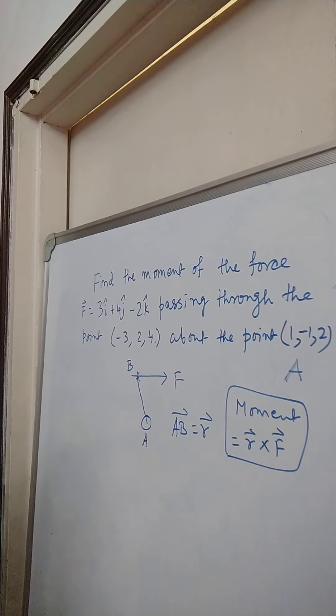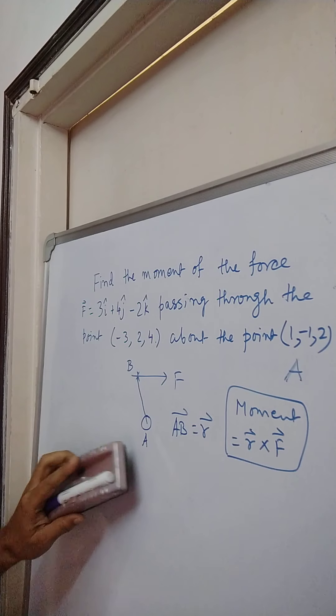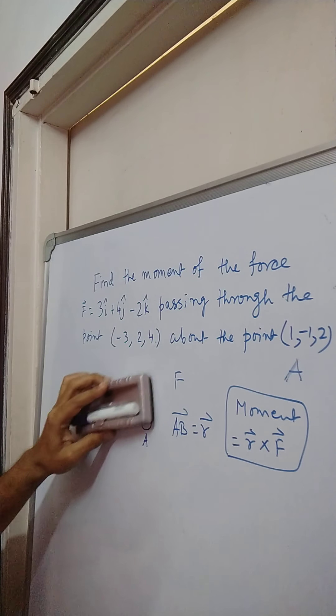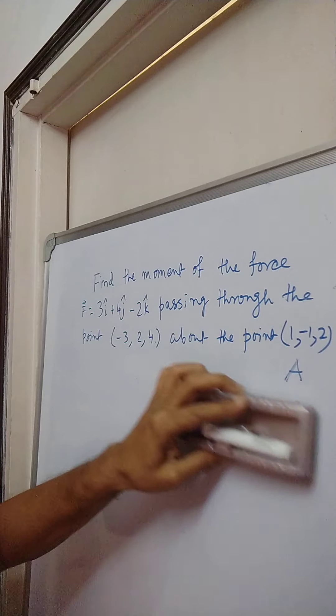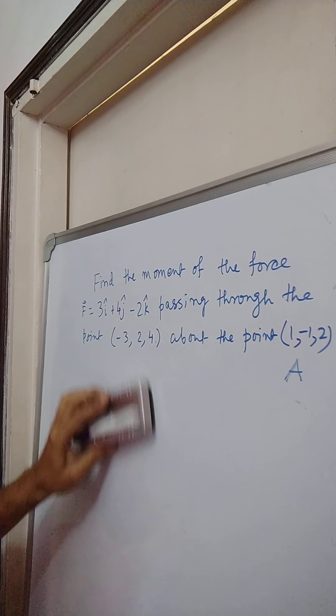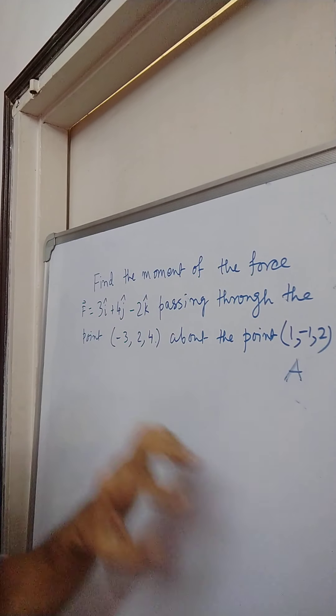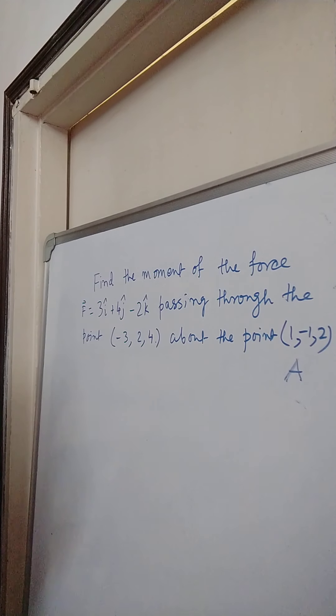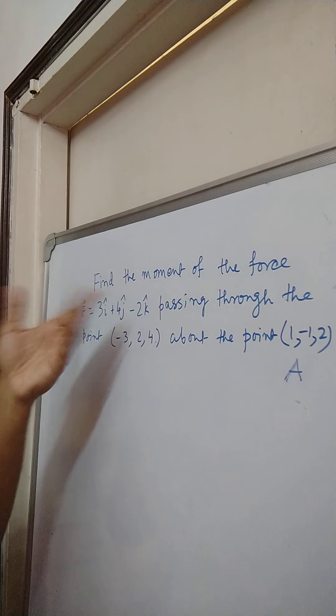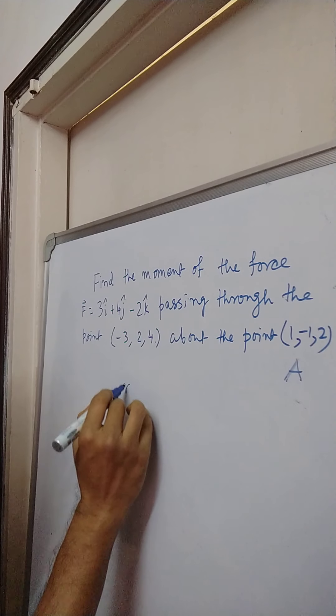In this problem we obviously first find the radius vector R. The A point is given as 1 minus 1, 2 and the B point is on the line of action of F. It is given in the problem. It is a very simple problem.